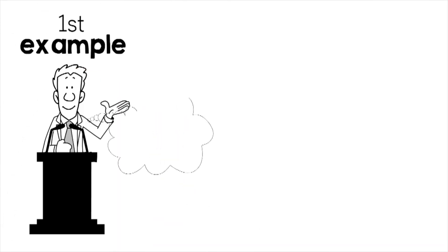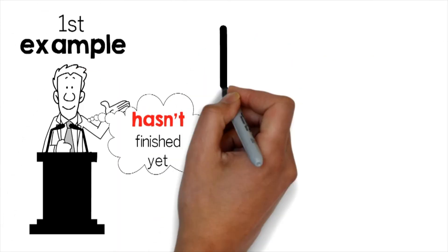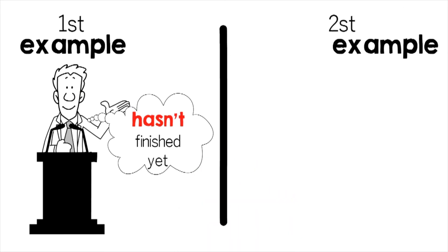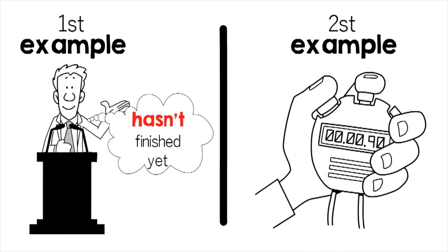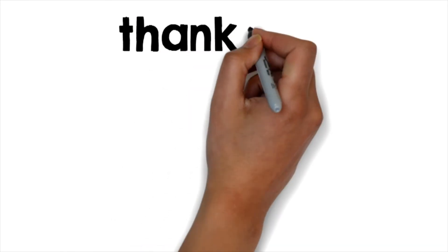In the first example, the reading action hasn't finished yet, while in the second example, from is used to express the complete duration. Hope it helps! Thanks for watching!